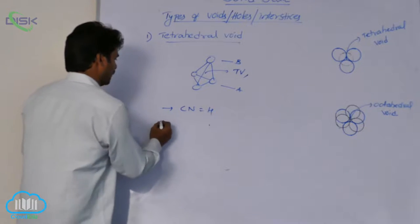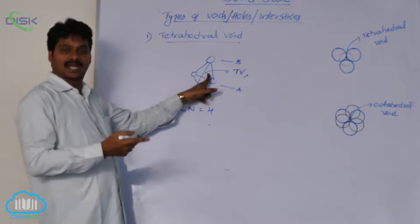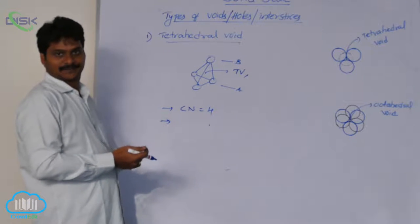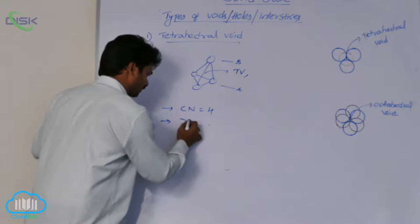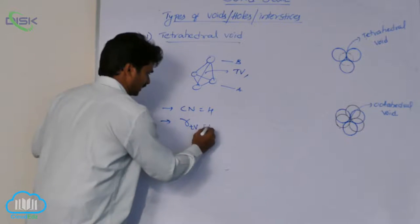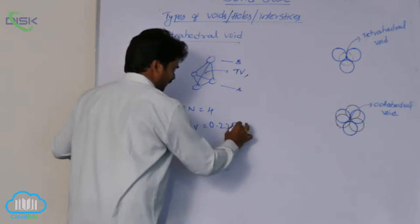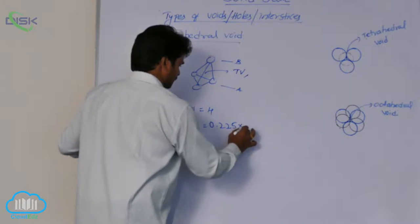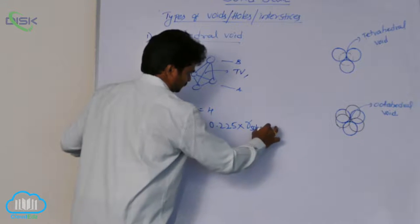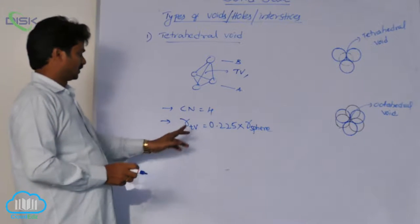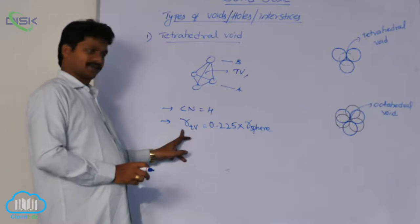How do we calculate the radius of a tetrahedral void? The radius of a tetrahedral void is equal to 0.225 times the radius of the sphere or atom. This is the formula to calculate the radius of a tetrahedral void.